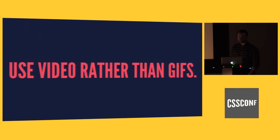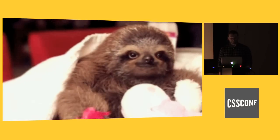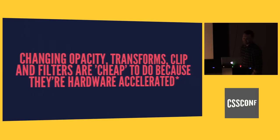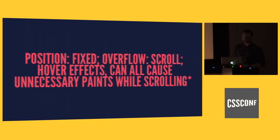Another thing we can do is use video rather than GIFs. Actually, everyone should follow their dreams and use a GIF because they make you happy. We know that changing opacity, transforms, clip, and filters are cheap because they're hardware-accelerated. We've learned recently — I was talking to Mark about this for Bootstrap — that position fixed can cause really interesting repaints and redraws when you're scrolling. They found that performance in Bootstrap went kind of crazy and actually pulled all those hacks out where they're adding Translate3D to try and push something to another compositing layer in the browser.